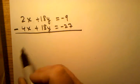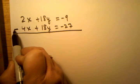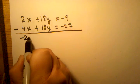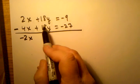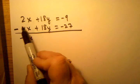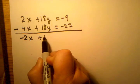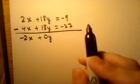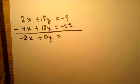So now, when I subtract these, here, I'm going to get 2x minus 4x, which is negative 2x. Here, I already said I'm going to get zero, because 18 minus 18 is zero. I can write that as 0y, or if I want, I can just write that as zero, because zero times y is zero.